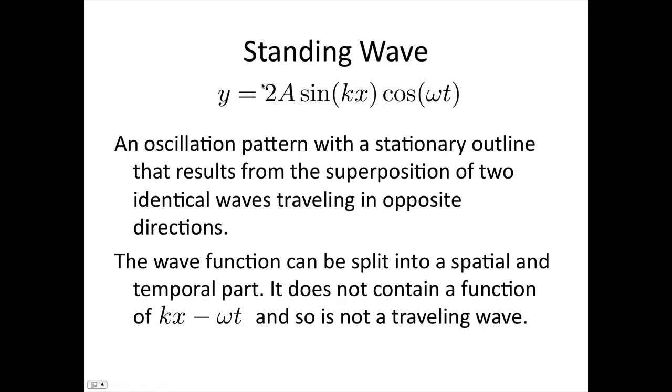Then as time progresses, this part oscillates between -1 and +1. So each element of string has its own amplitude given by 2A sin(kx), which is what's giving us this envelope or this stationary outline.